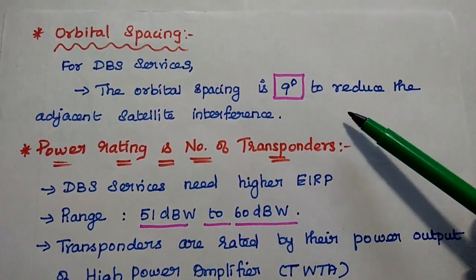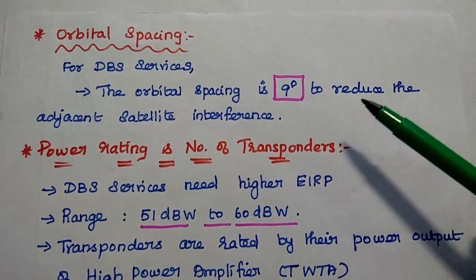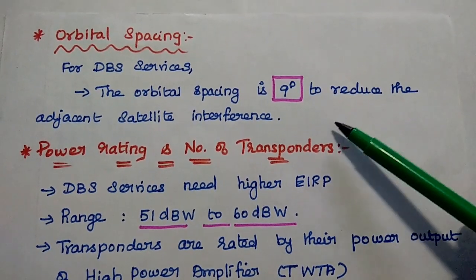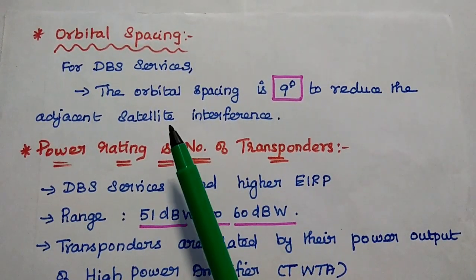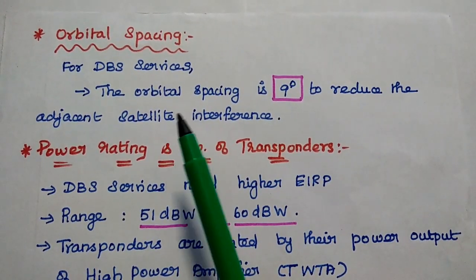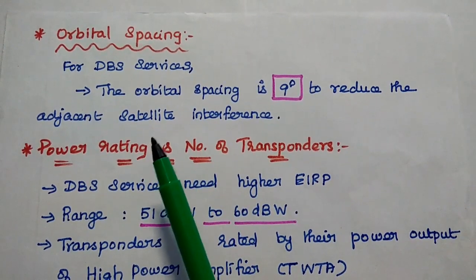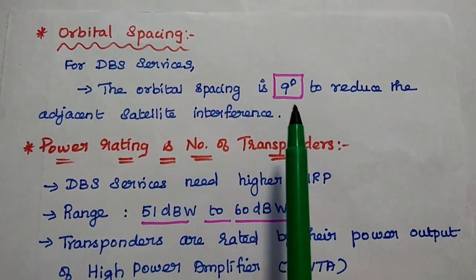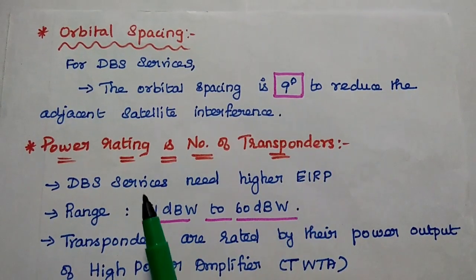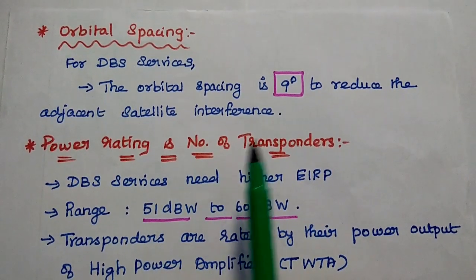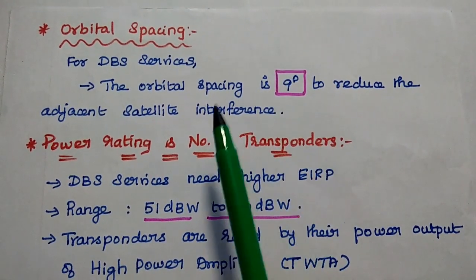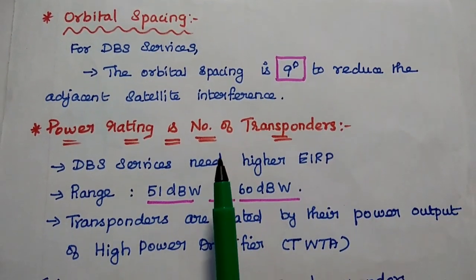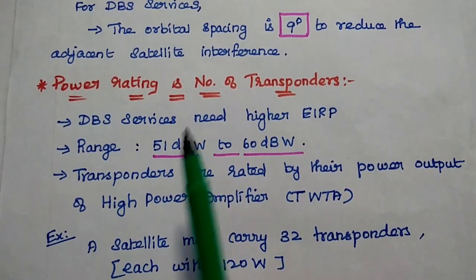We are going to discuss important parameters used in this direct broadcast satellite system. The first one is orbital spacing. For DBS services, the orbital spacing is 9 degrees to reduce the adjacent satellite interference.